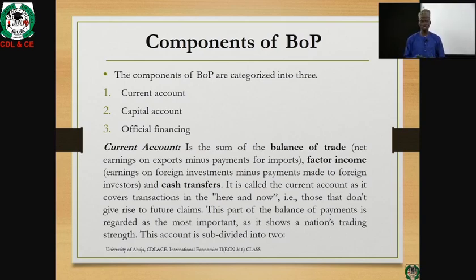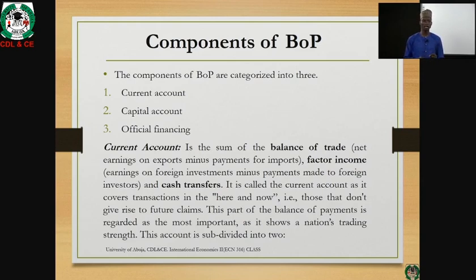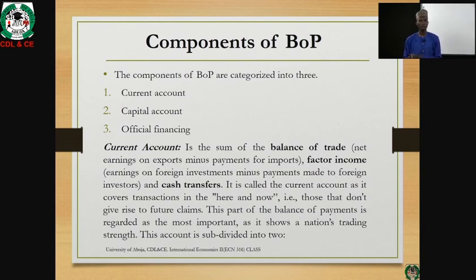The current account is the summation of balance of trade, factor income, and cash transfers. Balance of trade is the earnings on exports minus payments for imports. Factor income is the earnings on foreign investment minus payments made to foreign investors — that is, international flow of investment minus the payment made to these investors. Cash transfer is any cash that is being transferred across the border between the domestic economy and the international market.